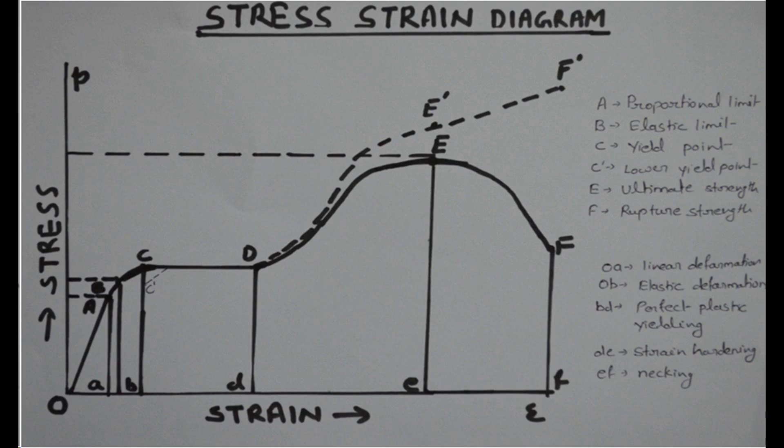During the extension, generally the area of cross section of the specimen decreases in same proportion the length always increases. And hence this is the reason of perfect plasticity or yielding.